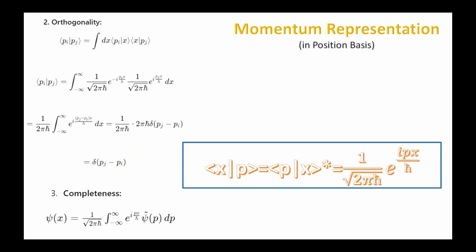The inner product of p-i with p-j is equal to the Dirac delta function of p-i minus p-j. That means two momentum states can't overlap — if two states have different momenta, they're separate states and can't overlap. There's also the completeness relationship: the completeness relation indicates that any wave function can be expressed as a sum over momentum eigenstates. This is the Fourier transform, and this is the inverse Fourier transform.